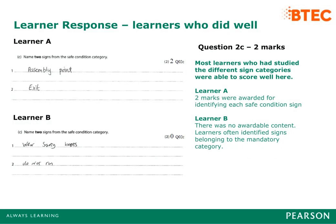Here we can compare responses from different learners. Learner A was awarded two marks for identifying each safe condition sign. Learner B received zero marks as there was no rewardable content. Learners often identified signs belonging to the mandatory category such as 'Wear safety boots' and 'Wear safety goggles'.